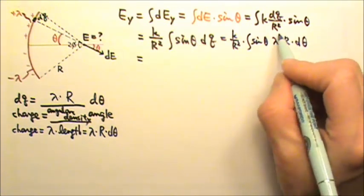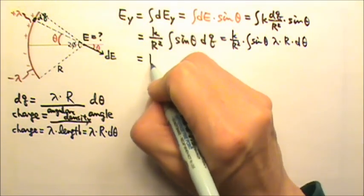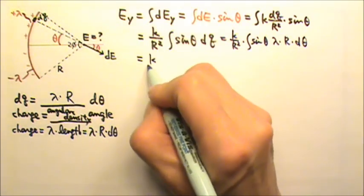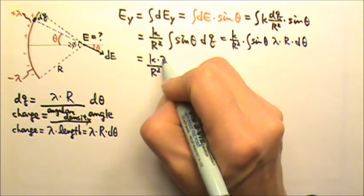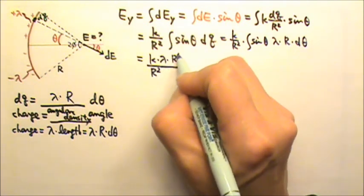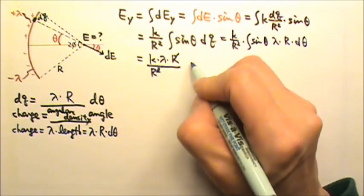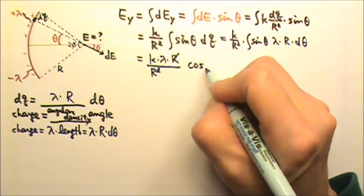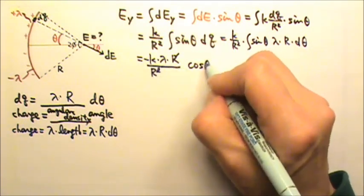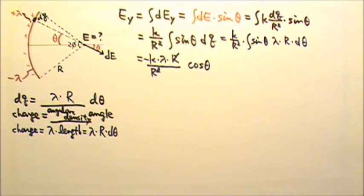Now λ times r can be taken out again. So that means it's k over r squared times λ times r. So of course, one of the r's cancel. And then we integrate sin θ, which gives us a cosine, actually negative cosine θ. What next?